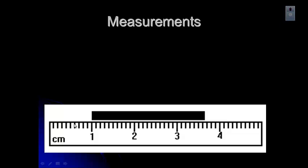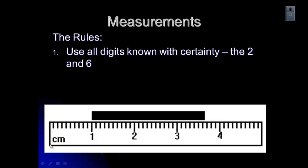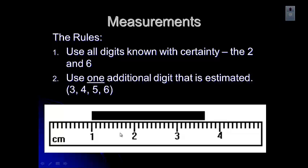So for measurements, the rules are you always use the digits you know with certainty. So we know that there are tick marks here for 1 centimeter and 2. So the first digit for the 2 we know. And then the tenths are marked. So we know the 2 and the 6. It's 2.6 something because we're going to estimate that one additional digit. So 2.63 centimeters, 2.64 centimeters. Any of those last digits would be acceptable.